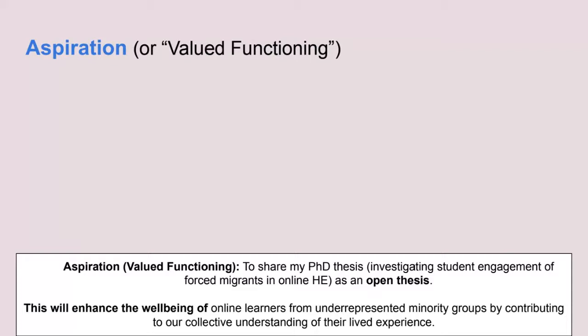If you look at the next slide, you'll see how I've positioned my aspiration and the rationale for whose well-being it will enhance at the very bottom of my sheet of paper — in portrait format, not landscape. Just transfer your aspiration and well-being notes using bullet points to the bottom of your piece of paper, in a box or cloud or bubble, and we're going to work upwards from there.